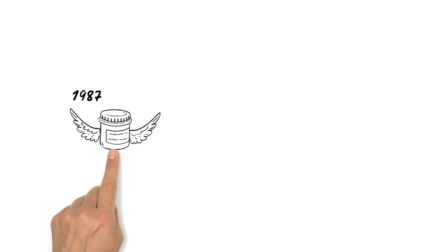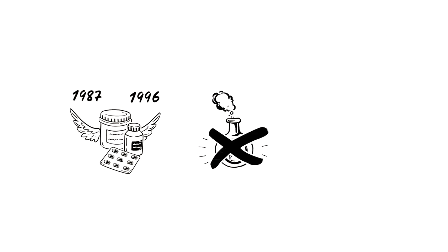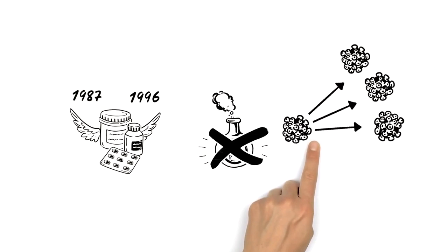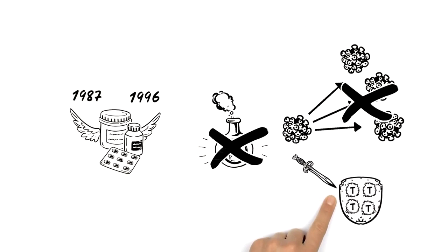Finally, in 1987, the first treatment against the virus was released, the ancestor of combination therapy. The medication still isn't a cure, but it keeps the virus from multiplying and destroying the host's immune system.